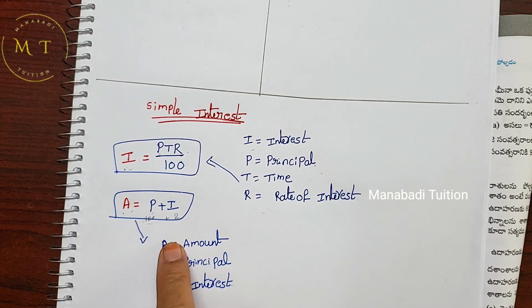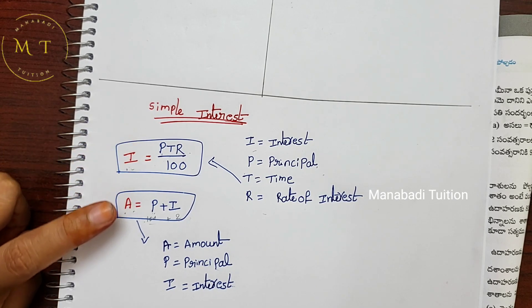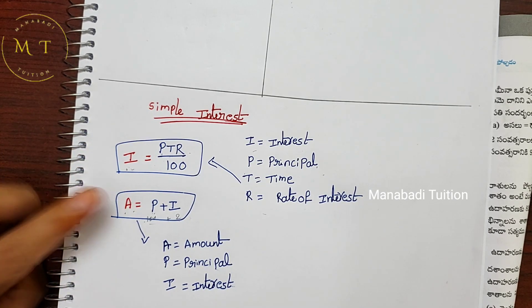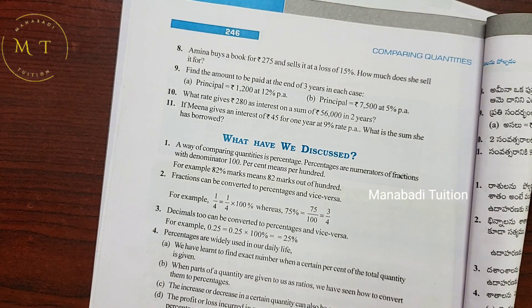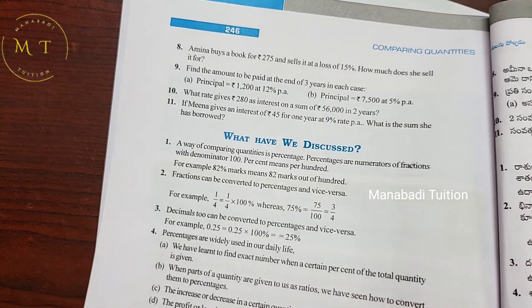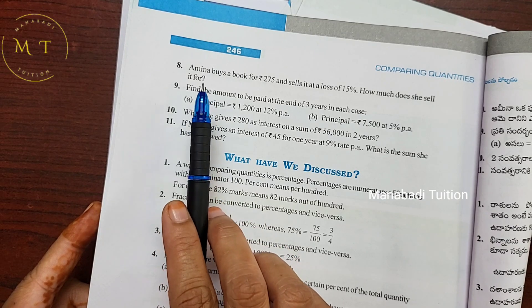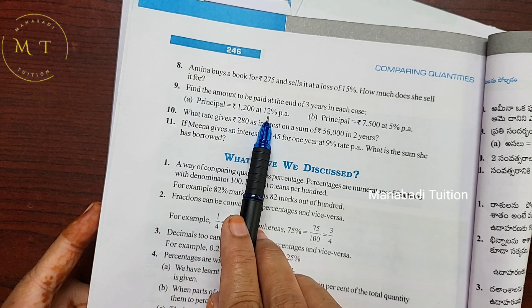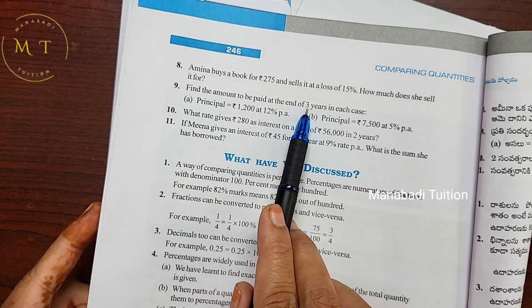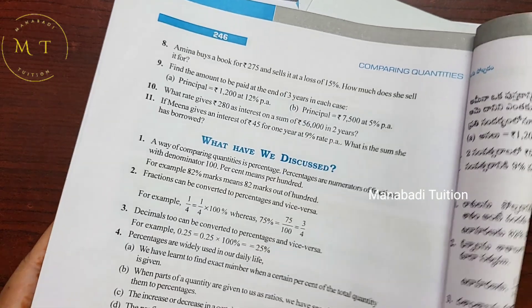We have two formulas: one to find interest, and one to find amount. For question 9: principal, rate of interest, and time are given — time is 3 years.